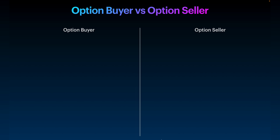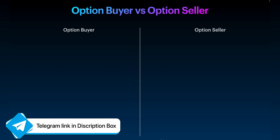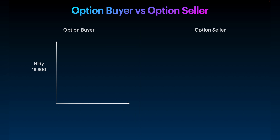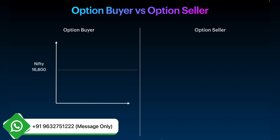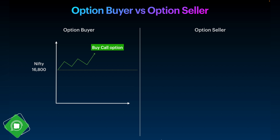On the left side we have the option buyer, on the right side we have the option seller. Now let's say this is a chart of Nifty and Nifty is currently trading at 16,800 level. If an option buyer feels 16,800 is a very strong support level, that means he feels the market will go up — he is bullish. When an option buyer is bullish, he needs to buy a call option. If he feels Nifty will go down, he is bearish, and he needs to buy a put option.